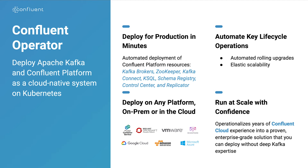Confluent Operator allows you to automate key lifecycle operations for your Kafka cluster, including rolling upgrades and elastic scalability. Using the operator, you can easily automate operations like rolling upgrades and elastic scaling. With Confluent Operator, you can go from one Kafka broker node to hundreds of Kafka nodes in a matter of minutes. And finally, Confluent Operator allows you to run Kafka clusters in your organization with confidence, without having a PhD in Kafka administration.